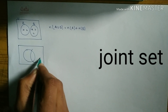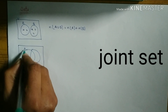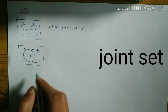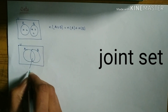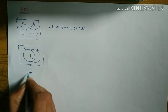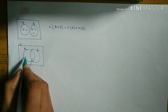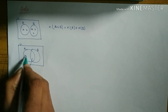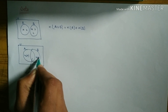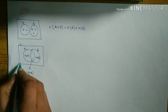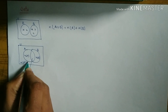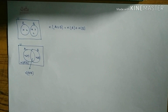Look at this diagram carefully and try to understand it. Set A and set B — this region is the union. The middle part is known as intersection, A intersection B. This region is only A, this region is only B, and outside of both sets is the complement of A union B.